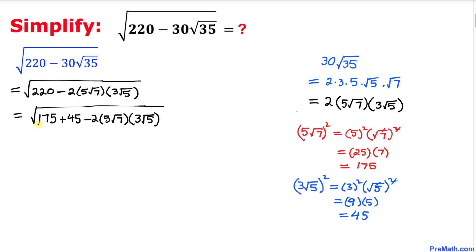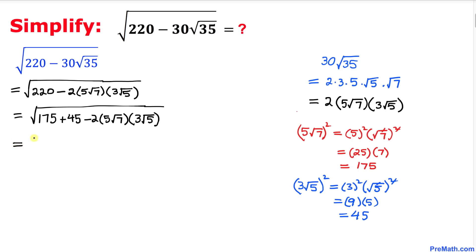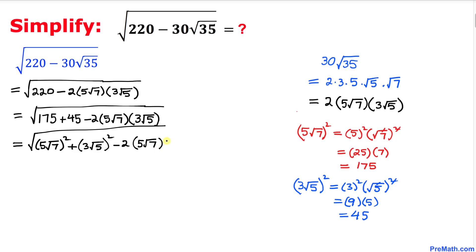In this next step, I am going to replace 175 with (5 times square root of 7) squared, because that equals 175. Likewise, I am going to replace 45 with (3 times square root of 5) squared, because that equals 45. So we can write the square root of the whole thing as (5 times square root of 7) squared plus (3 times square root of 5) squared, minus 2 times 5 times square root of 7 times 3 times square root of 5.